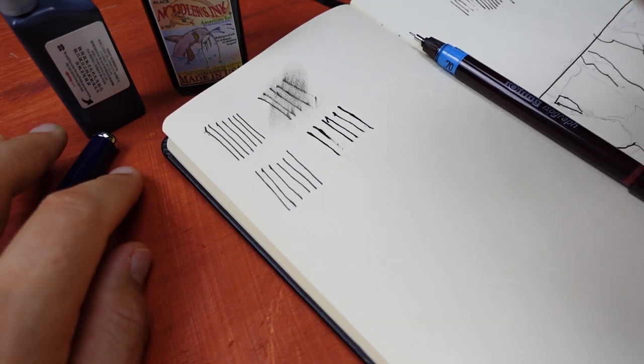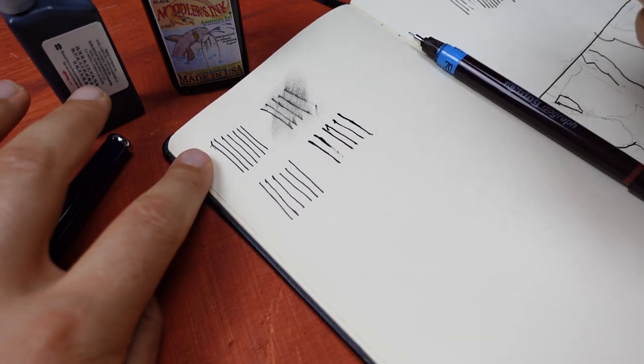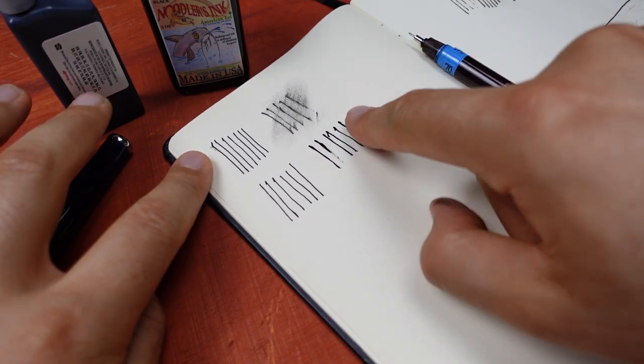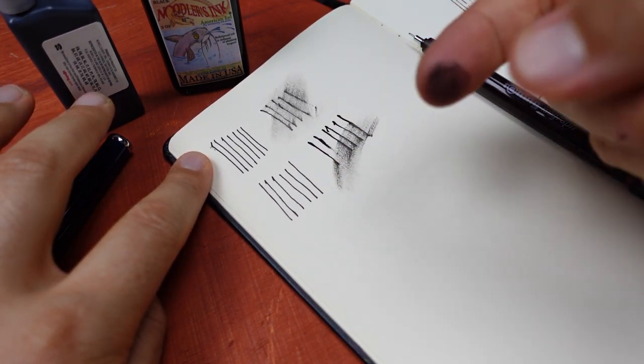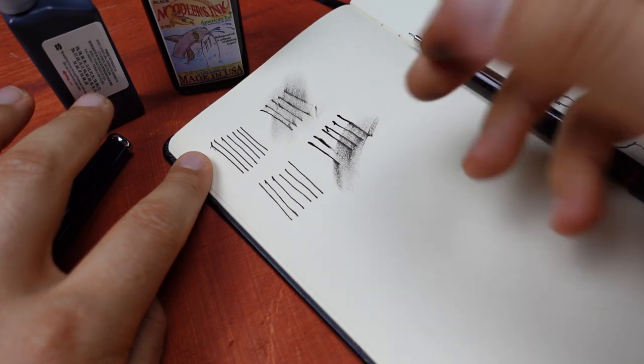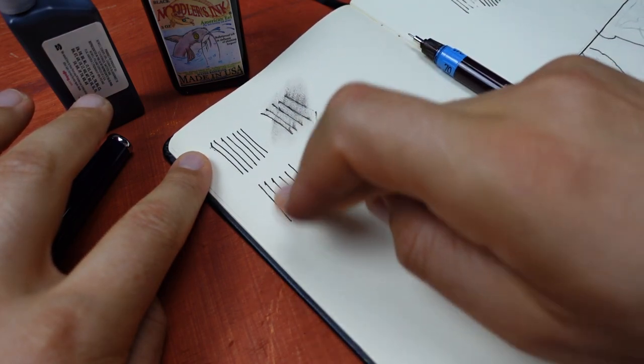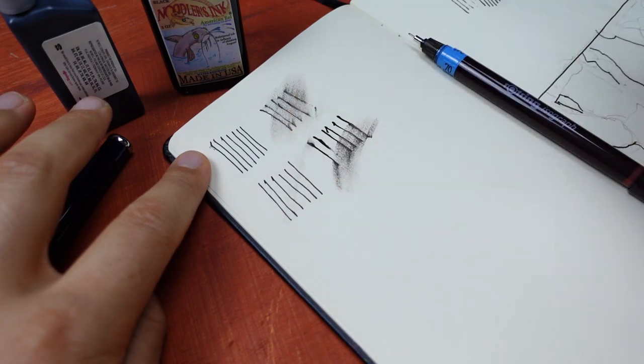So after 20 seconds, let's see. Let's test Noodler's. It still smudges. And Rotring. It's perfectly dried.